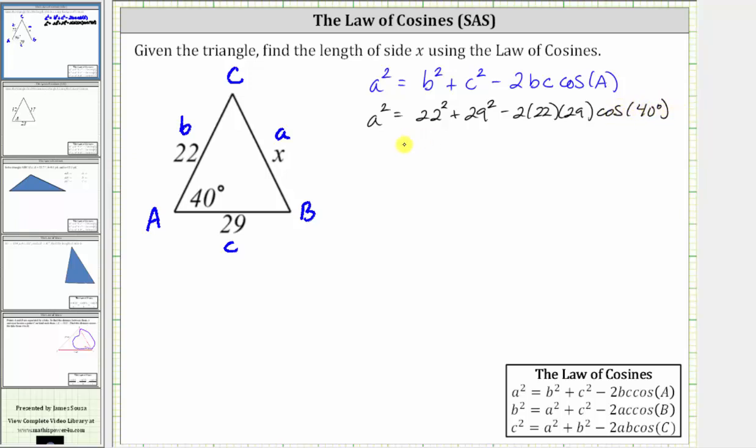And now let's begin simplifying the right side of the equation. 22 squared equals 484, plus 29 squared equals 841, minus 1,276 cosine 40 degrees.